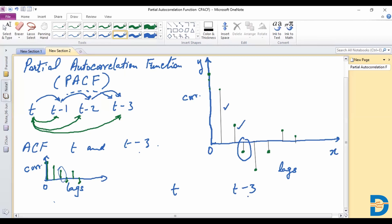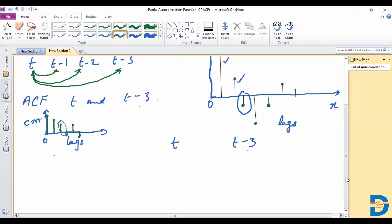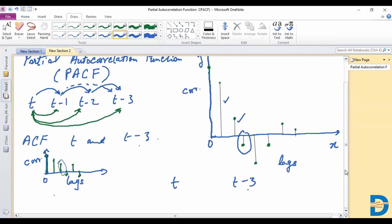But for our purpose, for the partial autocorrelation function, these indirect correlations would be ignored, which is to say we will only be taking the correlation between t and t minus 3, regardless of all the observations that fall in between.